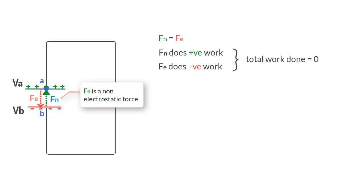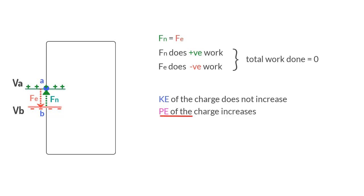So the total work done is zero and if the net work done is zero, the kinetic energy of the charge does not increase. But you can see the potential energy has increased since it has moved from a place of low potential to a place of high potential. It is quite like you moving from a place of low gravitational potential to a place of high potential without changing your kinetic energy, but still increasing your potential energy.